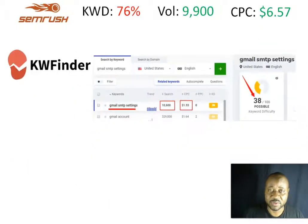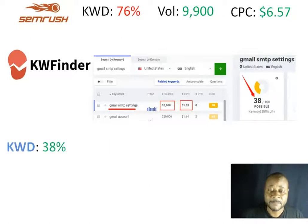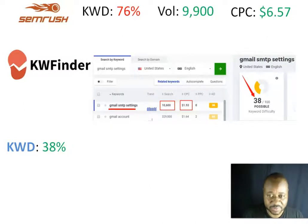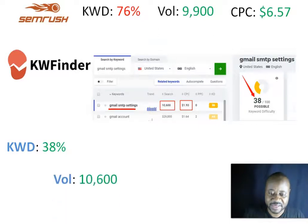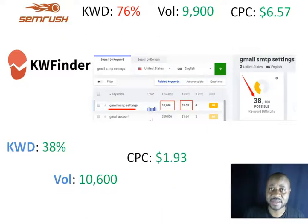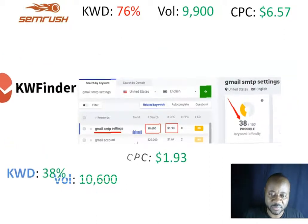Next is KWFinder. According to KWFinder, the keyword difficulty is 38%, rated as 'possible' — not as difficult as SEMrush suggests. The volume is 10,600 searches, not so different from SEMrush, and the cost per click is $1.93.